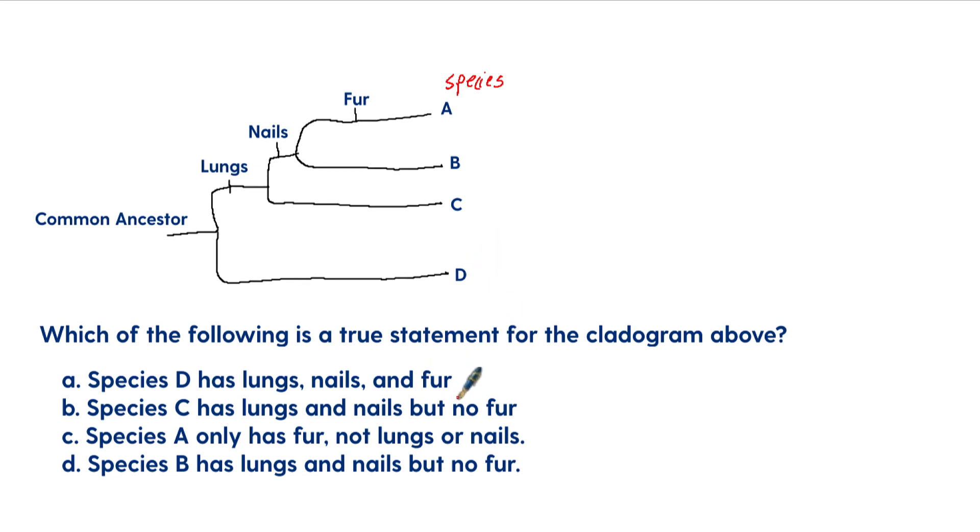A says that species D has lungs, nails, and fur. No, in fact, it has none of those. Species C has lungs, but no fur. Let's look at that. Species C has lungs. That's true. And nails, but it doesn't have nails. You can see right here, it splits off. C does not have nails. So B is not correct.